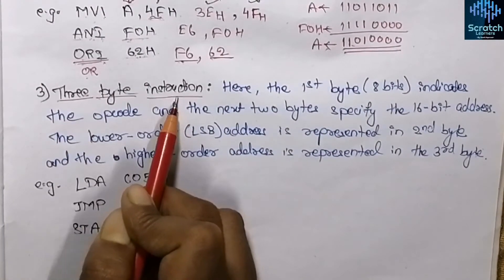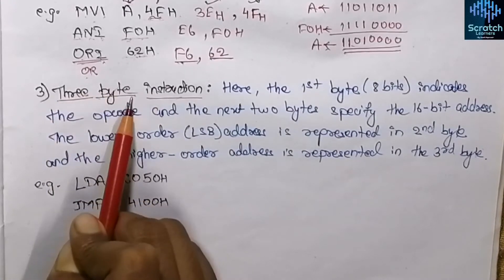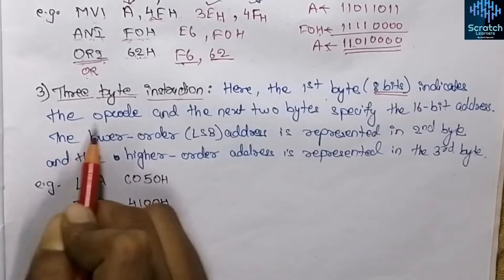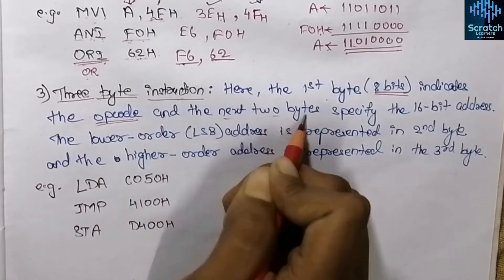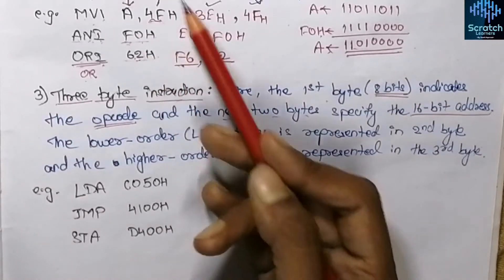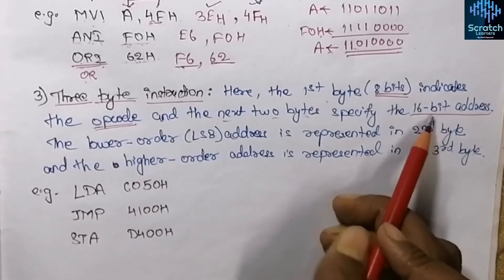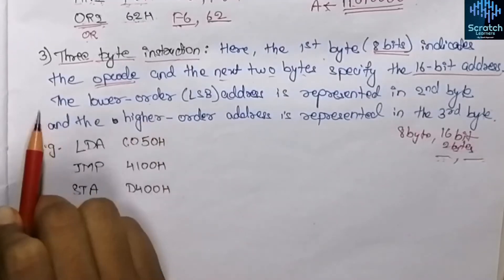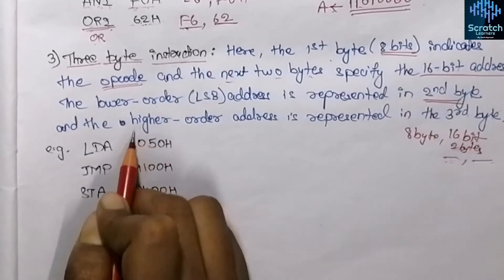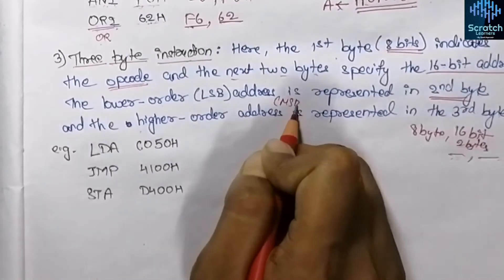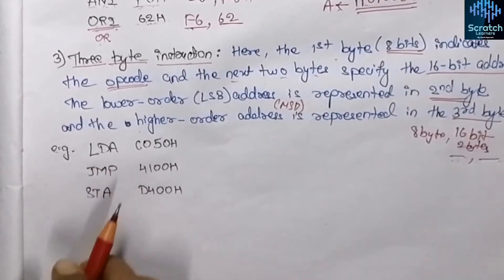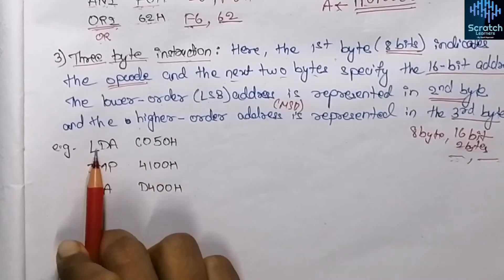The next category is three byte instructions. Here we need three bytes of memory. The first byte — the first eight bits — indicates the opcode. The next two bytes specify the 16-bit address. Unlike previous types where the operand was 8-bit data, in three byte instructions the operand is a 16-bit address. The lower order address — the LSB — is represented in the second byte, and the higher order address — the MSB — is represented in the third byte.